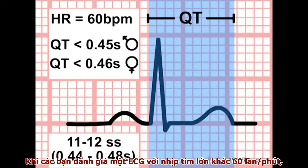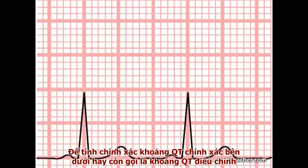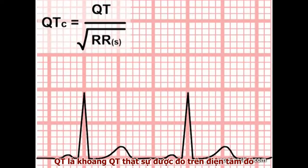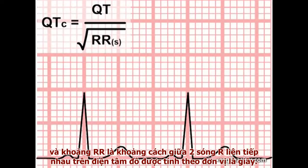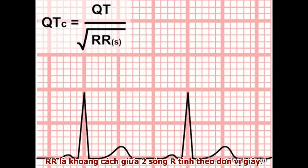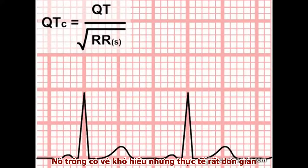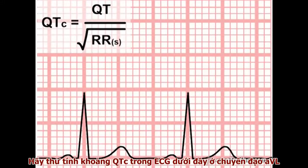When faced with an ECG with a heart rate other than 60 beats per minute, to calculate the true underlying QT interval — referred to as the corrected QT interval — we use the formula shown on screen. The corrected QT interval is equal to the observed QT interval divided by the square root of the RR interval. The RR interval is the distance between the preceding R waves measured in seconds. Let's try and calculate the corrected QT interval on this readout from AVL.